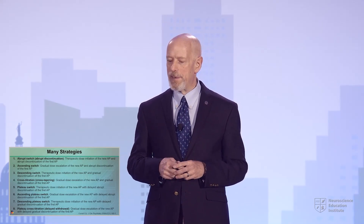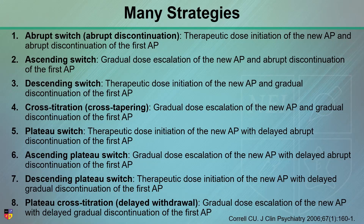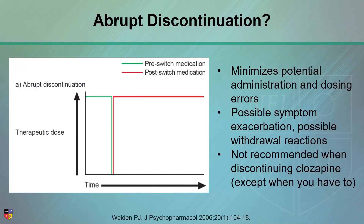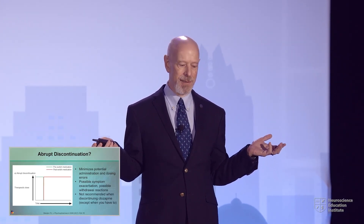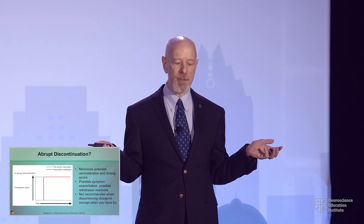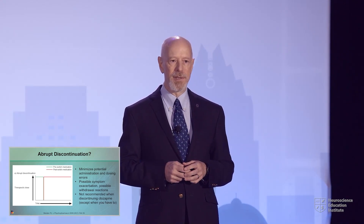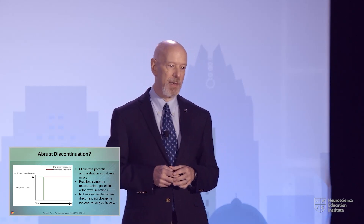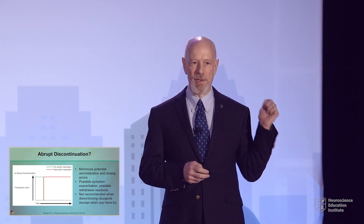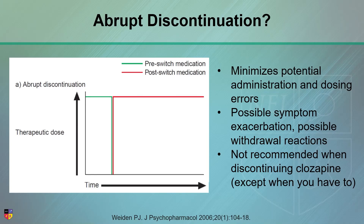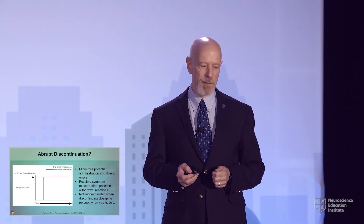There are many strategies — more strategies than yoga positions — so I wouldn't pay too much attention to a long list. I'll go over three basic strategies. Abrupt discontinuation is simple and easy to understand, easy to write, but you may have symptom exacerbation and possible withdrawal reactions. You run the risk of someone suddenly having more symptoms and withdrawal side effects from the prior drug. Don't do this if you don't have to — you may have to with clozapine, but avoid it otherwise.